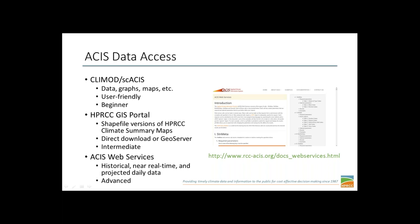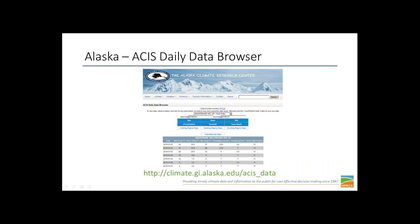Now I want to show some examples of how people are using ACIS. First up is the Alaska Climate Research Center, which is home to the Alaska State Climatologist. They have a daily data lister pictured here. A person can come to the site, select a station in Alaska, and grab the data they need. You can select different choices and build your table of data.